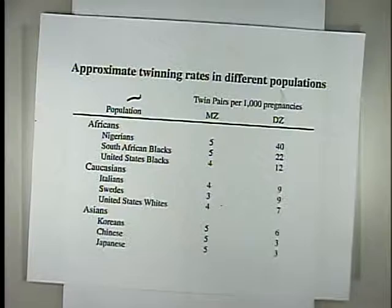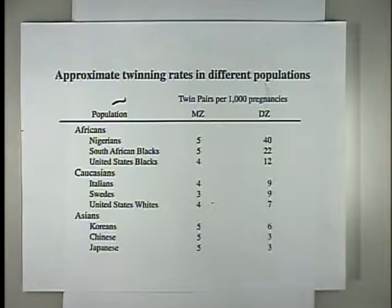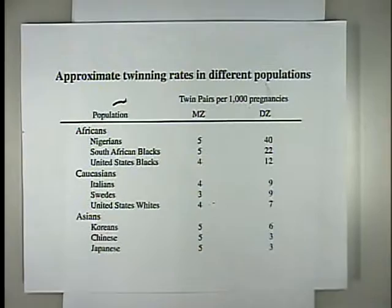The twinning rates for MZ pairs are actually fairly stable across all countries and all racial and ethnic groups in the world, whereas DZ rates vary more dramatically. The rate for MZ twins is fairly constant in different ethnic groups and across different regions of the world, whereas the DZ rates vary quite dramatically — from Nigerians in Africa who have the highest rate, to Japanese and Chinese who have about the lowest rates. This is pre-fertilization and pre-assisted reproductive technologies, which has probably changed things a little bit.